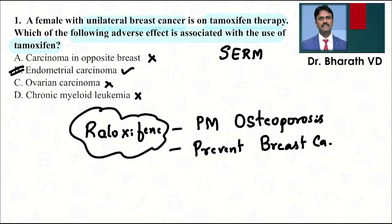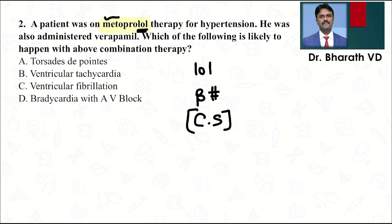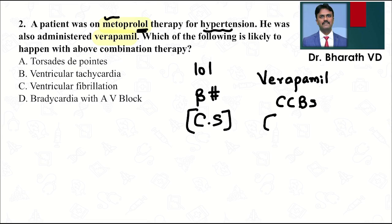Moving on to the second question. A patient was put on metoprolol — anything ending with '-lol' is a beta blocker. Metoprolol is a cardioselective beta blocker given for hypertension. The patient was also administered verapamil, which is a calcium channel blocker — a non-dihydropyridine. The question asks: what is likely to happen with this combination?